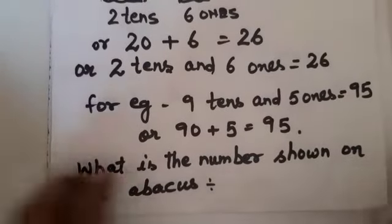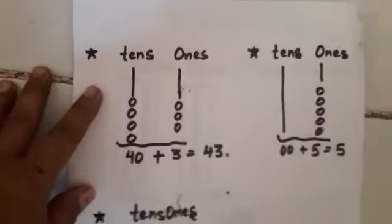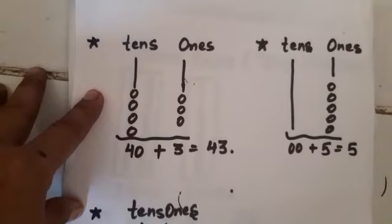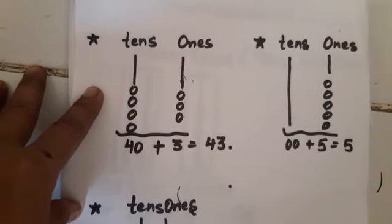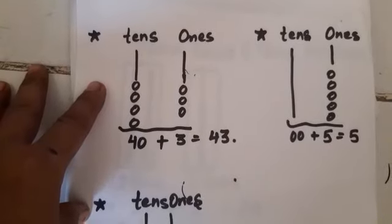What is the number shown on the abacus? First, we have to define what is an abacus. An abacus is an instrument with which we can count numbers.